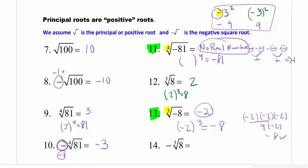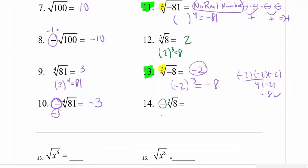Going on to number 14: that same idea — the negative is outside the parentheses, so I'm keeping it. The cube root of 8 is 2, so my answer is negative 2. These problems you're going to do super quick in your homework, but you're going to make careless mistakes. Please stop and make sure you truly understand why you got it wrong.